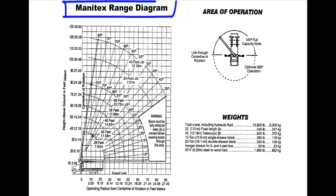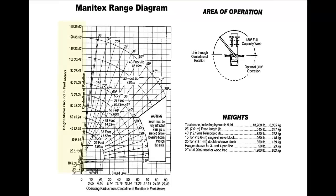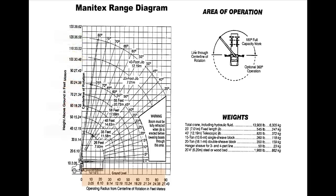Number 3: The Range Diagram. On this range diagram, on the left-hand side in the vertical column, you will see a height above ground in feet section. This has a series of arcs that correlate with the lower section of the range diagram. The lower section on the horizontal plane is the operating radius, measured from the center line of rotation.